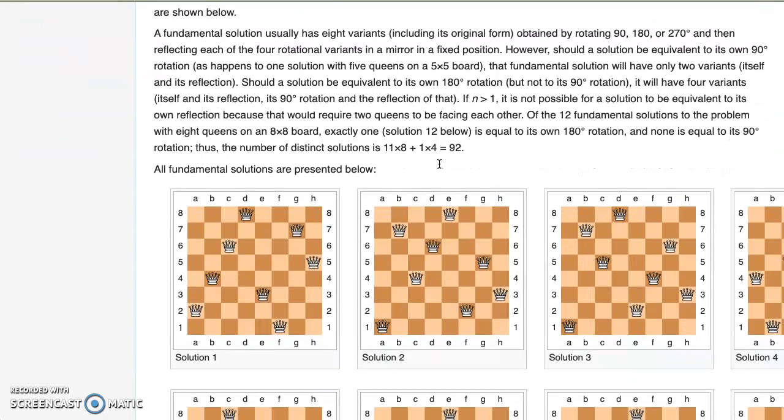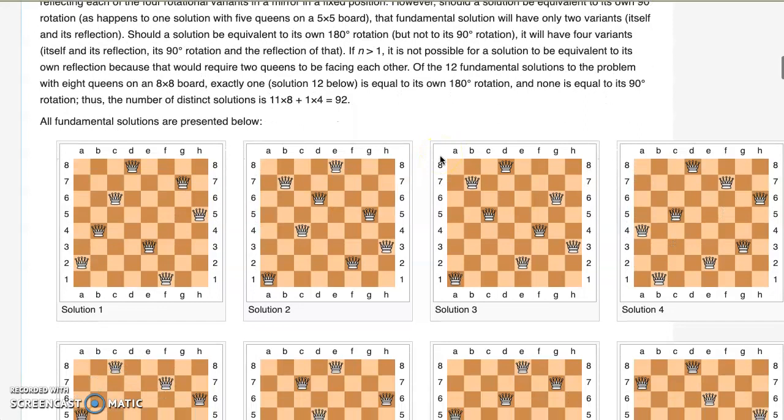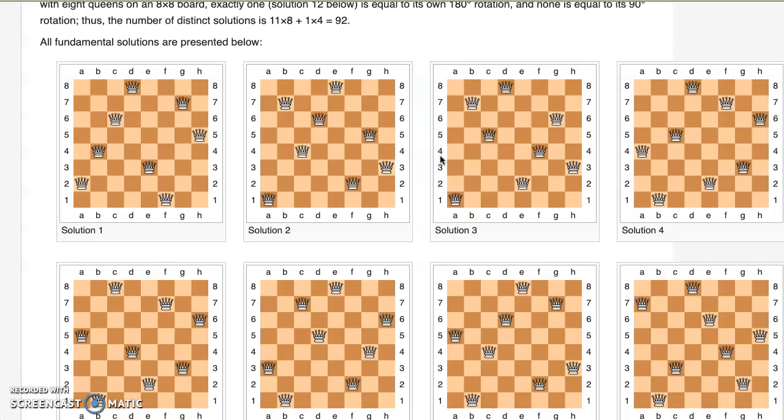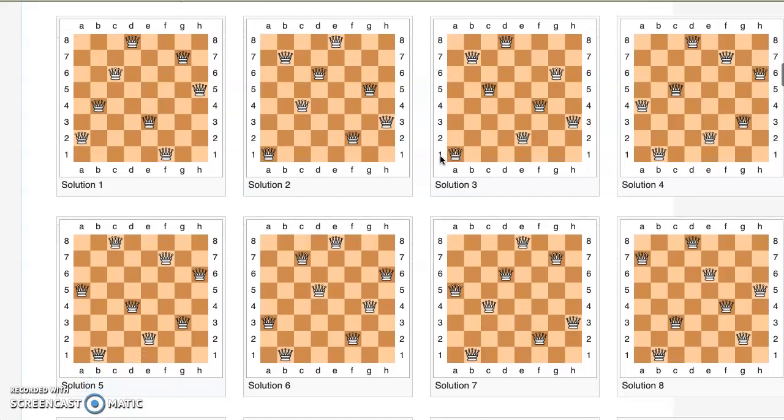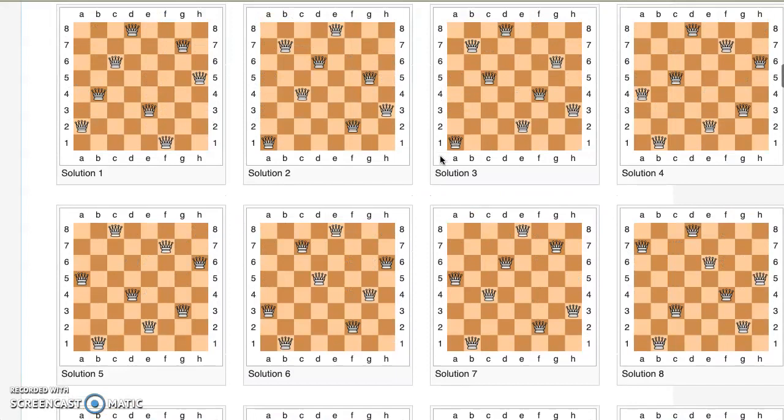So here's several solutions to the eight queens problem. I don't think they repeat like some of the reflections of the chess boards with some of the same setups, but you can see there are several solutions, but there's also a lot more possibilities for the queens.